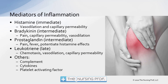Some mediators of inflammation: some are immediate, some a little later, and some really late. Histamine is immediate — as soon as we step on that nail or sprain a knee, histamine is released, causing vasodilation and capillary permeability. Bradykinin is also released very quickly, causing pain and again capillary permeability and vasodilation. Notably, multiple things stimulate vasodilation and capillary permeability — there's lots of redundancy in our inflammatory response to ensure invaders are dealt with.